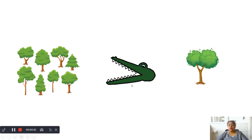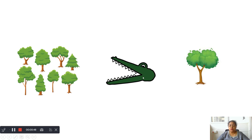Greater than means the direction of the alligator or the crocodile will be open to the left side. See the mouth of the alligator or the crocodile — the mouth is open on the left side. This is the symbol of greater than or more than.